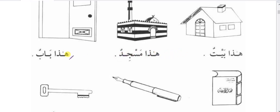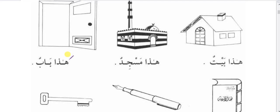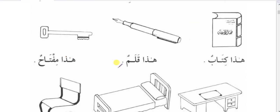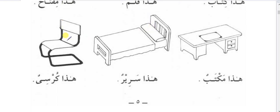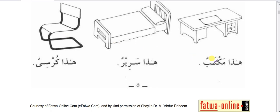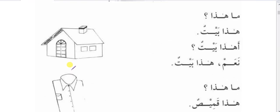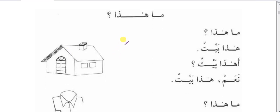Examples: haza masjidun — this is a masjid; haza baabun — this is a door; haza kitabun — this is a book; haza qalamun — this is a pen; haza miftahun — this is a key; haza maktabun — this is a table; haza sarirun — this is a bed; haza kurthiyun — this is a chair. Now maa is used for asking questions about non-human beings.